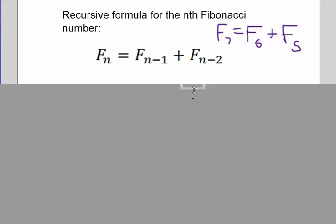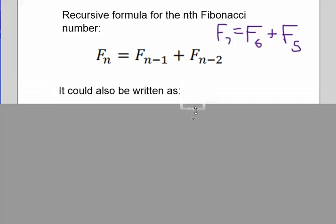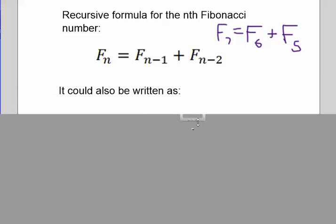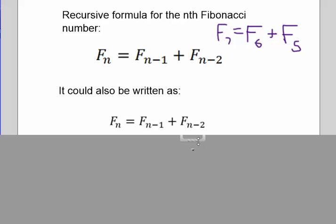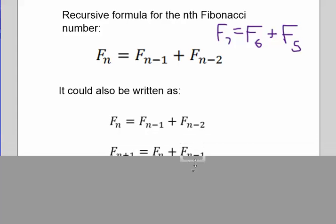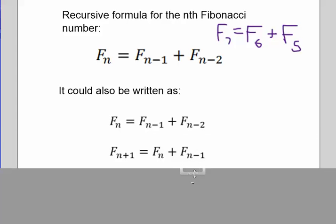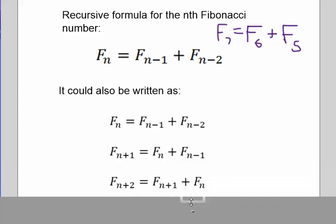This is called a recursive formula, meaning to build up the next number, we use the previous numbers in the list. I'd like to point out that this can also be written this way. This is equivalent to what I have, but here's a second way. Fn plus 1 is equal to Fn plus Fn minus 1 and Fn plus 2 is equal to Fn plus 1 plus Fn. I hope you can see that these are equivalent.